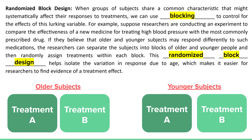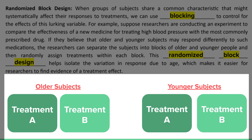A randomized block design is a special type of experimental design where groups of subjects share some common characteristic that might systematically affect their responses. If we group them all together, it could be challenging to know if the results are due to our treatment or due to this other variable. So we use blocking to control for the effect of this type of lurking variable. For example, suppose older subjects will respond differently than younger subjects to a treatment for high blood pressure — so we block by age. One block of older subjects, one block of younger subjects, and then within each block, half get treatment A and half get treatment B. This randomized block design helps isolate the variation in the response due to age, making it easier for researchers to find evidence if the treatment is having an effect.